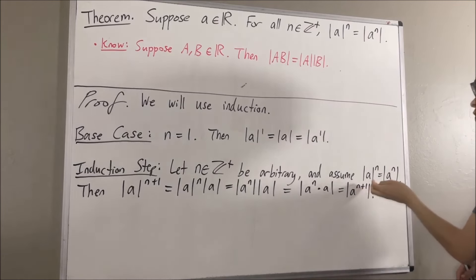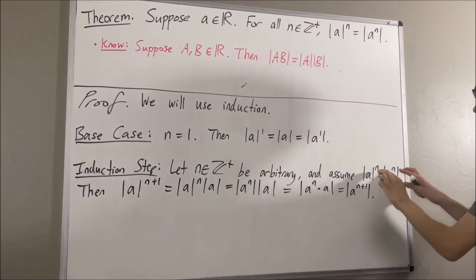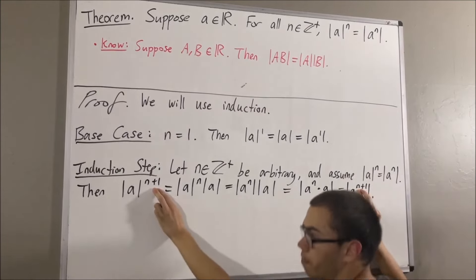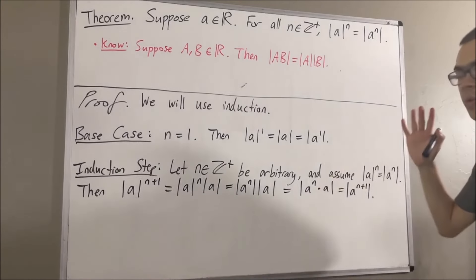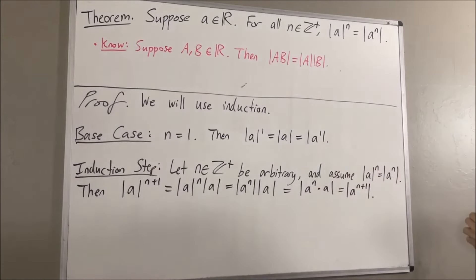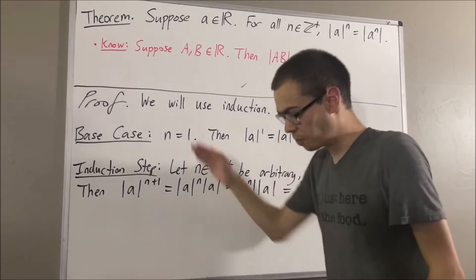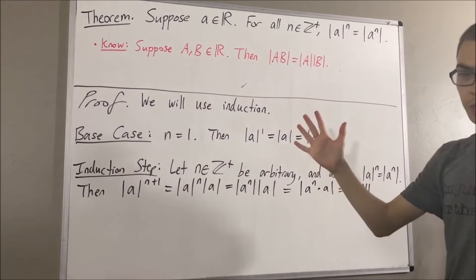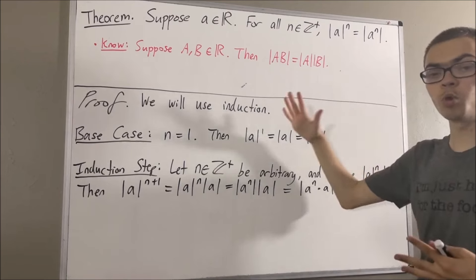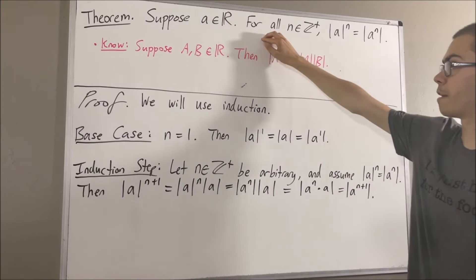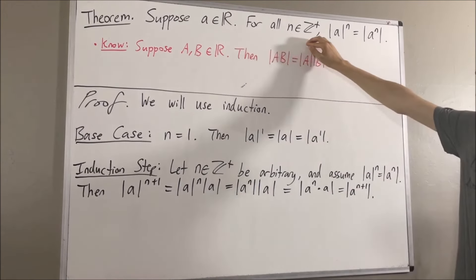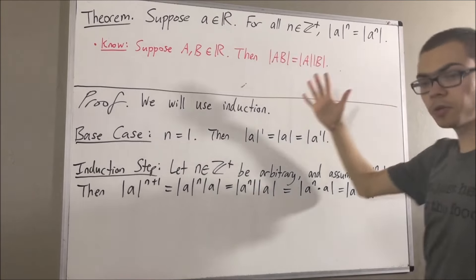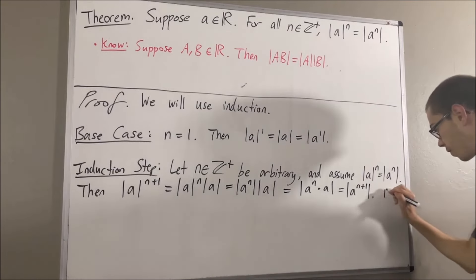So we have shown that this is true where instead of n we have n plus 1, and this completes the induction step. Because we've completed both the base case and the induction step, this closes the induction. So we have proven by induction that for all positive integers n, this is true. And so this proves the theorem.